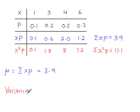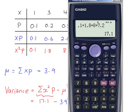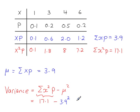So the variance is equal to sigma x squared p minus the mean squared. This value here is 17.1, minus the mean squared. Remember to square this value. 17.1 minus 3.9 squared equals 1.89.